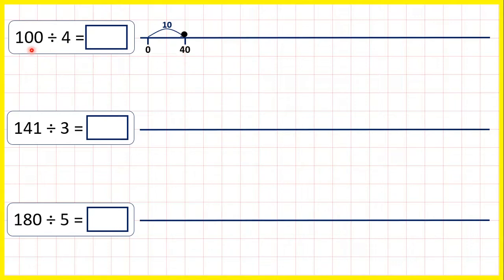But that's still less than 100, so we can make another jump of 10 4s, adding another 40 to our number line. 40 plus 40 is 80. So 80 is what we get from altogether 20 jumps of 4.